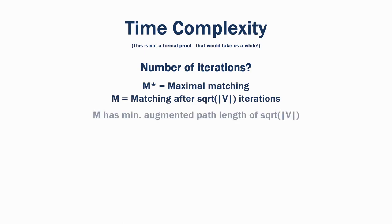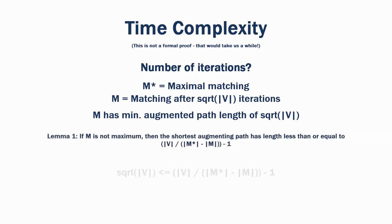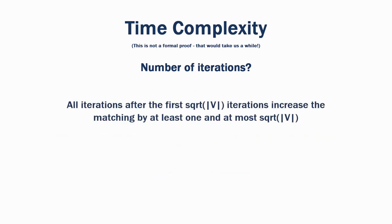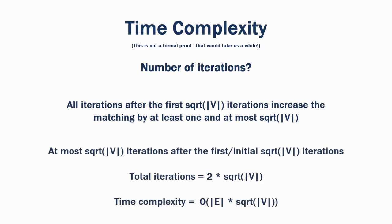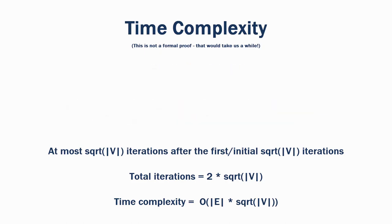It can be shown that for M, any augmenting path will have a length of at least √V. Therefore, using Lemma 1, we can create the following equation. Rearranging this equation, we have the following. Therefore, after the first √V iterations, each subsequent iteration can increase the size of the matching by a maximum of √V vertices. Each iteration of the Hopcroft-Carp algorithm increases the size of the matching by at least one vertex. Therefore, there can be at most √V further iterations. Thus, the total number of iterations is equal to the first √V iterations plus the further √V iterations, making at most 2√V iterations. Thus, the Hopcroft-Carp algorithm has a maximum time complexity of O(E√V), where E is the number of edges and V is the number of vertices.